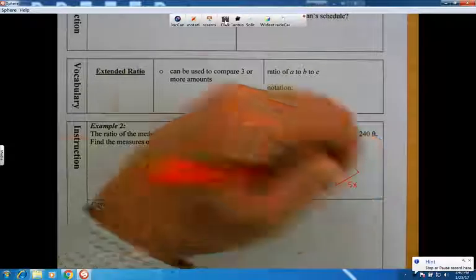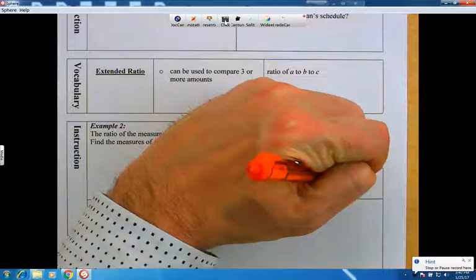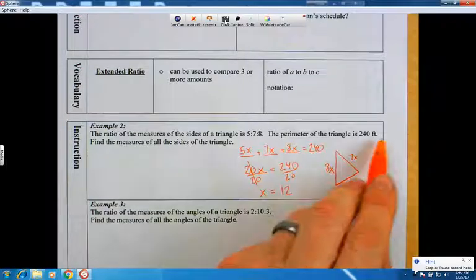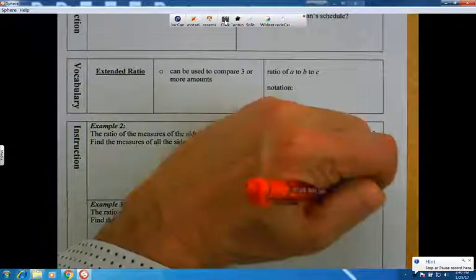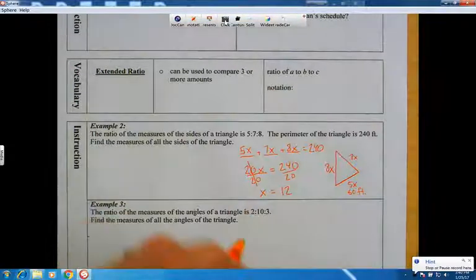5 times 12 is 60. So this side right here is 60, I would argue, in its feet. So it's 60 feet long.